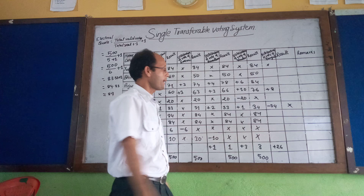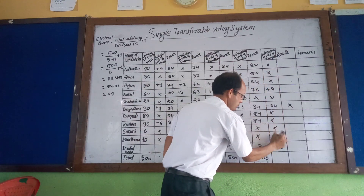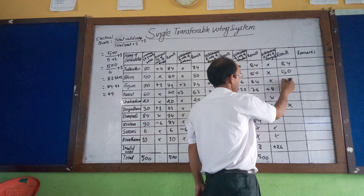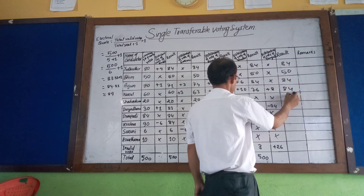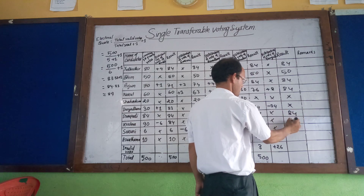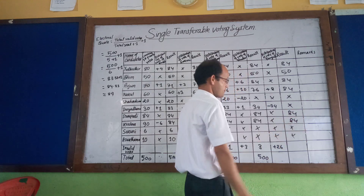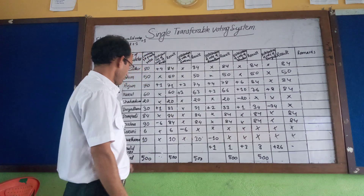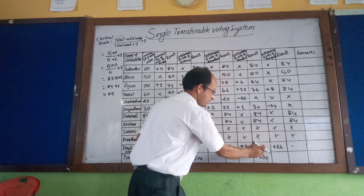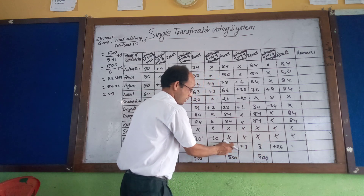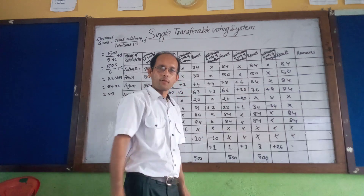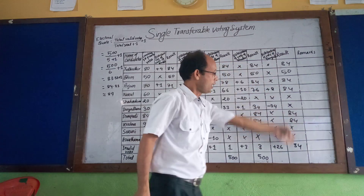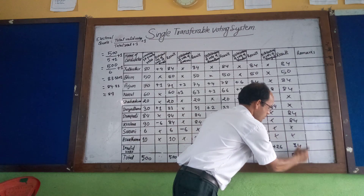The final tally shows: 84 elected, 50, 84 elected, 84 elected, out of the race, 84 elected, out of the race. Total invalid votes are 26, and the remaining unused votes bring the total to 34 votes not used. All together, the 500 votes are accounted for.